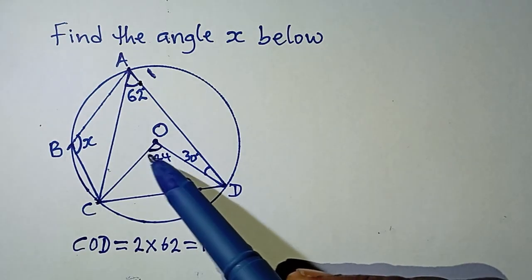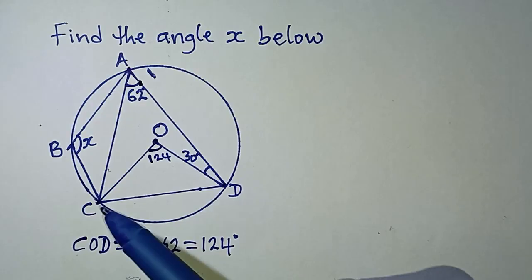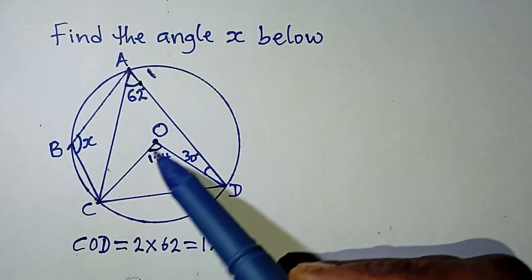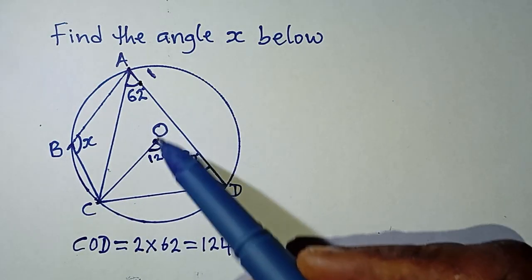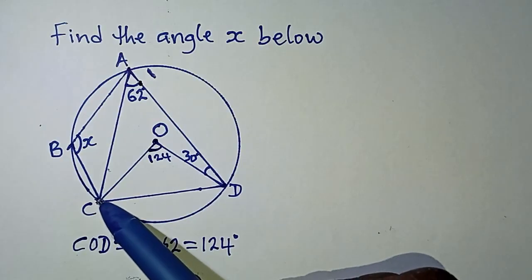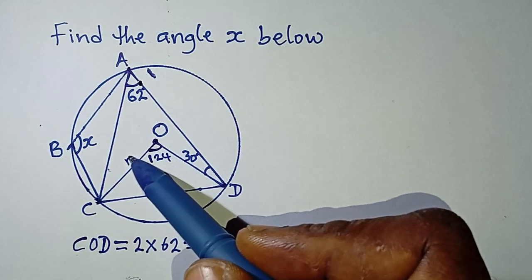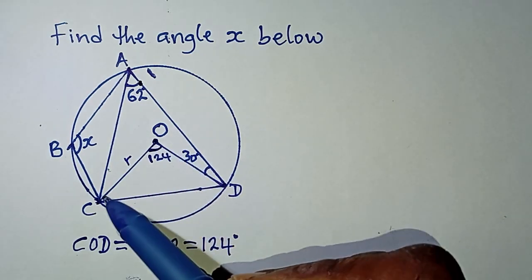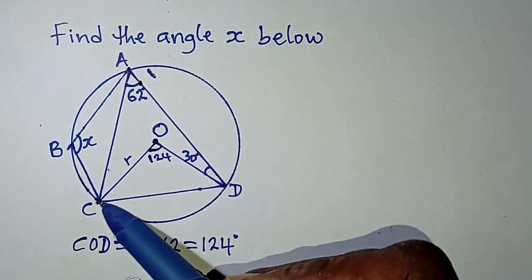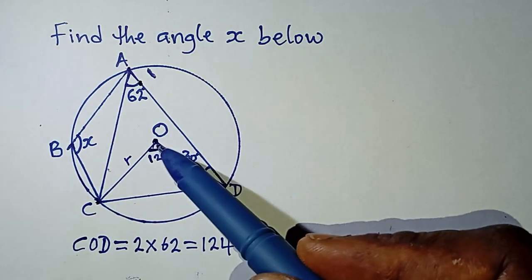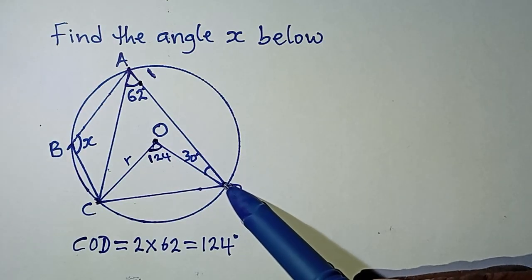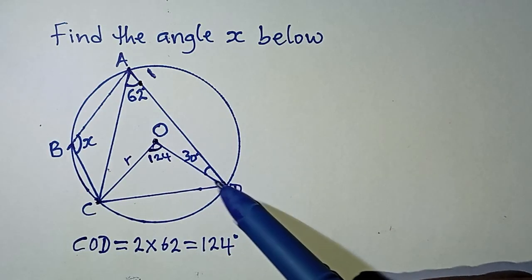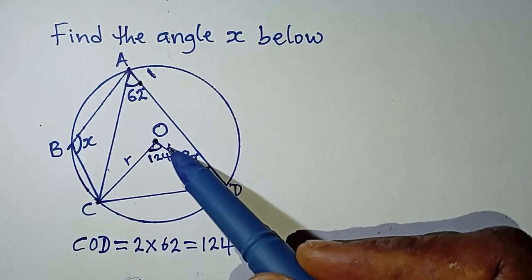Now we have 124° as the angle at the center. Looking at triangle ODC — O is the center of the circle. A line from the center of a circle to the circumference is a radius, so line OC is a radius. Similarly, line OD is also a radius because it starts from the center and goes to the circumference.